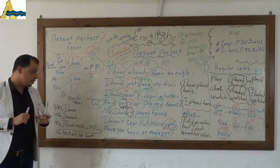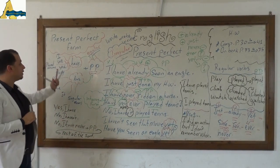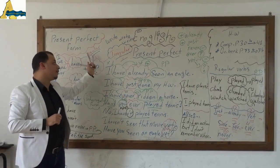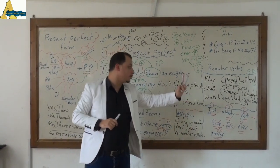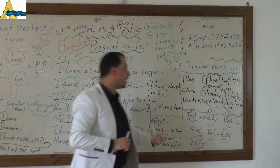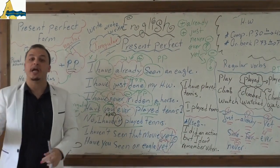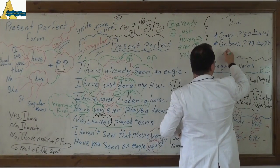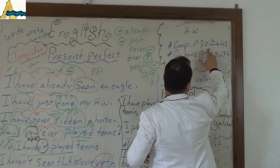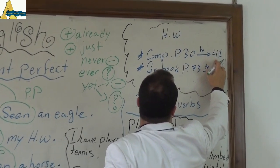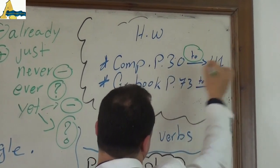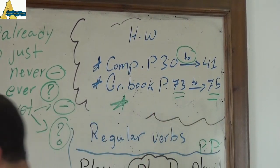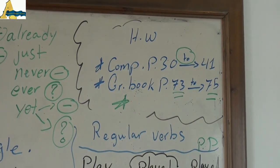Did you understand it now? Nothing hard — we have explained everything: the form itself, and the past participle which consists of two forms. Regular verbs add '-ed': watched, played, climbed. Irregular verbs change form: write, wrote, written; drive, drove, driven. Don't forget to finish these as homework — comprehension page 30 to 41, and grammar book pages 73 to 75.